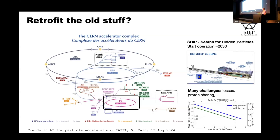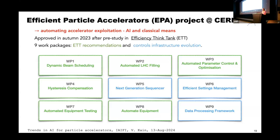One motivation is the SHiP experiment, just approved, which will start operations in the 2030s and pose many new challenges. For example, we will need to increase the number of protons on target by a factor of five while keeping the same physics running simultaneously, and there are beam-loss issues due to increased intensities. This motivated management to approve the creation of the Efficient Particle Accelerators project at CERN — budget approved in June — all about automating accelerator operation with AI and machine learning.